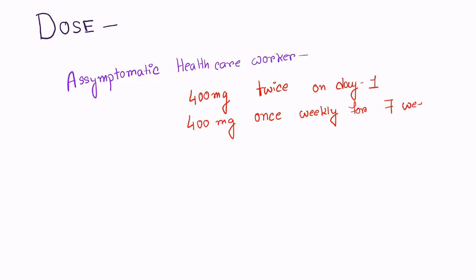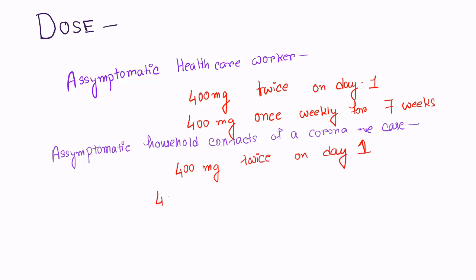Coming to the dose of hydroxychloroquine: For asymptomatic healthcare workers, it is 400 mg twice on day 1 followed by 400 mg once weekly for next 3 weeks. For asymptomatic family members of a corona positive case, it is 400 mg twice on day 1 and 400 mg once weekly for next 3 weeks.